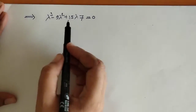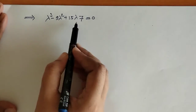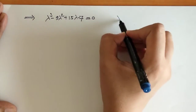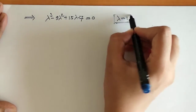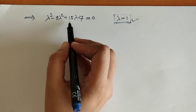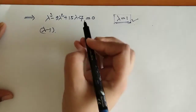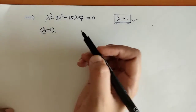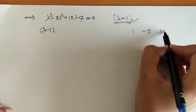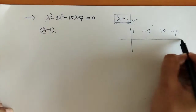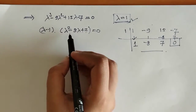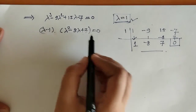Now we will find the roots of this equation. This is a cubic equation. We can check that lambda equals 1 is one root of this equation — when we put lambda equals 1, the equation gets satisfied. So lambda minus 1 is one factor. The other factor can be found by synthetic division.